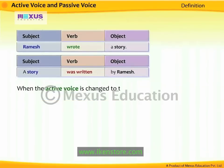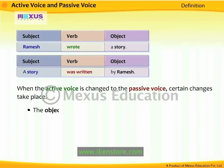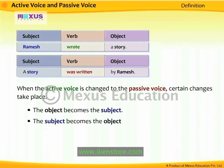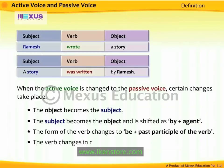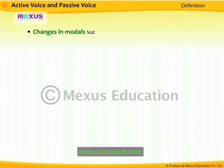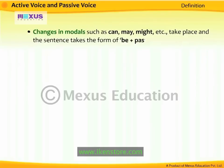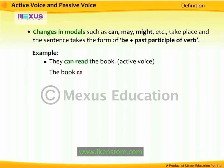When the active voice is changed to the passive voice, certain changes take place. The object becomes the subject — so 'story' becomes the subject. The subject becomes the object and is shifted as 'by + agent' — Ramesh becomes 'by Ramesh.' The form of the verb changes to 'be + past participle' — 'wrote' changes to 'was written.' The verb changes in number to suit the new subject. Changes in modals such as can, may, might, etc. also take place, and the sentence takes the form of 'be + past participle.' For example, 'They can read the book' becomes 'The book can be read by them.'